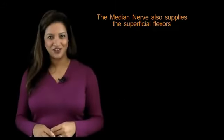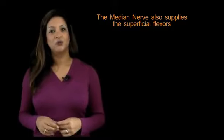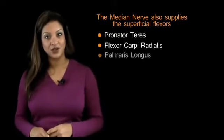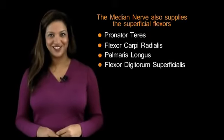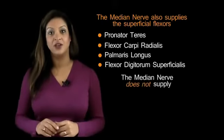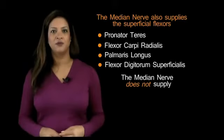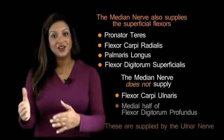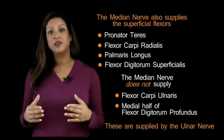The median nerve itself supplies the superficial flexors, including pronator teres, flexor carpi radialis, palmaris longus, and flexor digitorum superficialis. The only two flexors the median nerve does not supply in the forearm are the most medial in the superficial and deep compartments — flexor carpi ulnaris and the medial half of flexor digitorum profundus — which are in fact supplied by the ulnar nerve.